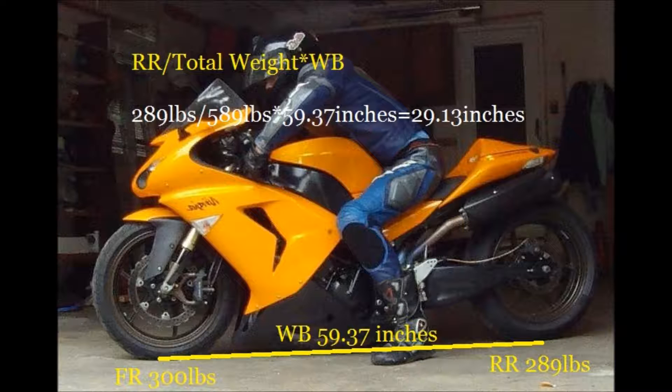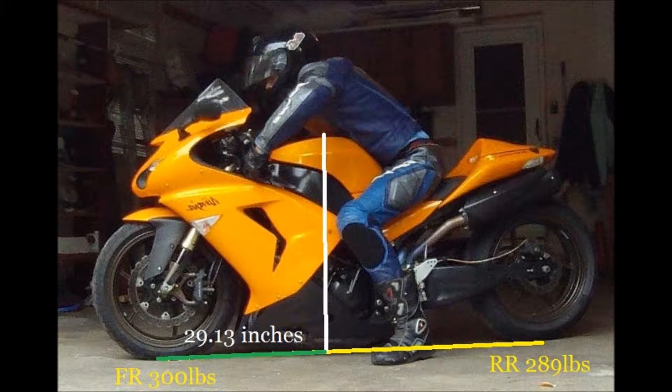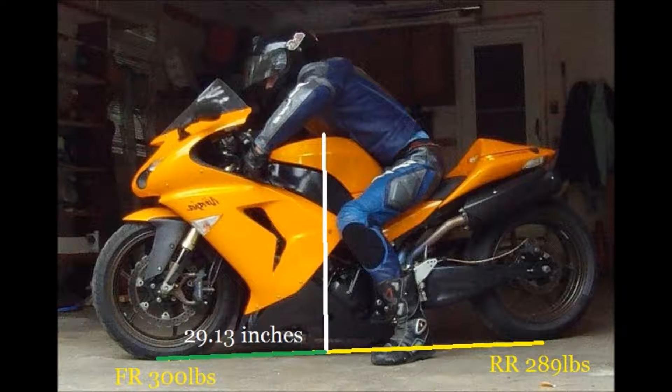So first we're going to take the weight that's on the rear wheel which is 289 pounds, then we divide that by the total weight which in my case is 589 pounds, and then we multiply it by the wheelbase which is 59.37 inches. And using a basic calculator you should come up with 29.13 inches. What that number means is that the center of mass of this bike is going to be 29.13 inches behind the front axle.